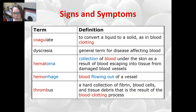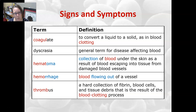Hematoma is a collection of blood under the skin as a result of blood escaping into tissue from damaged blood vessels — basically like a bruise. Hemorrhage is blood flowing out of a vessel; it usually indicates a bigger quantity.